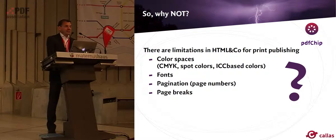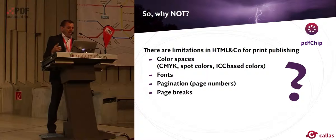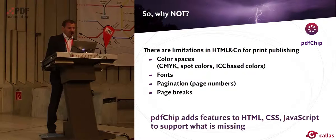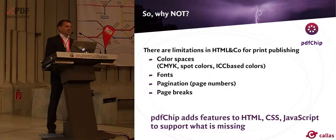But there are other things that may cause problems, like color spaces in print — CMYK or spot colors — which you cannot have in HTML. What about fonts? What about pagination? In a browser you don't have the concept of a page, so what can you do about page numbers and page breaks? What PDF Chip does is it extends the feature set of HTML, CSS, and JavaScript to support what is missing. It supports print color spaces like CMYK, arbitrary fonts, page numbering, and page breaks.